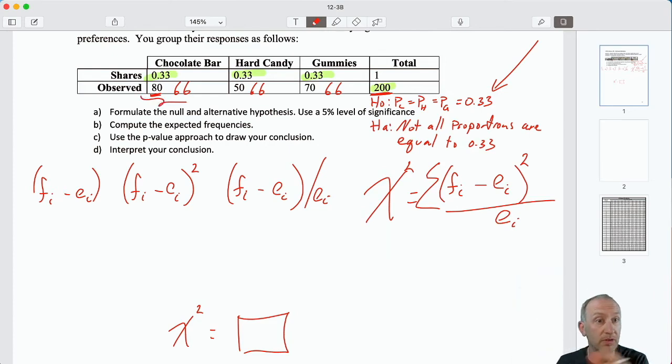So 80 minus 66 squared divided by what we expect, which for all of them is 66, and that gives me 2.97. Now I'm comparing these two values, 50 minus 66, 16, 16 squared, divide by 66.